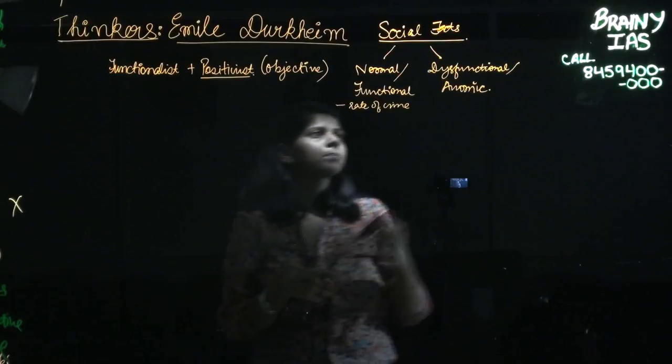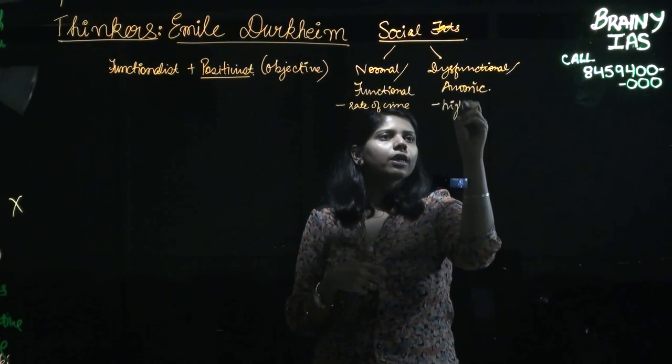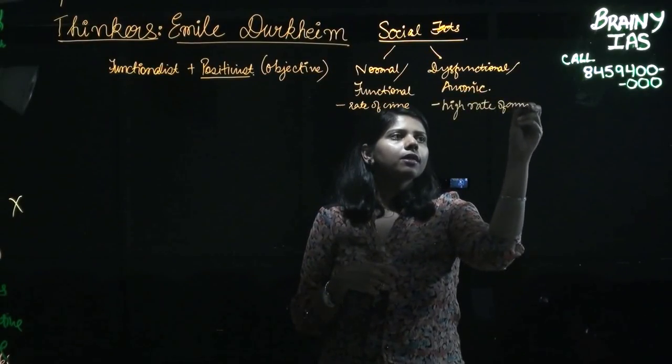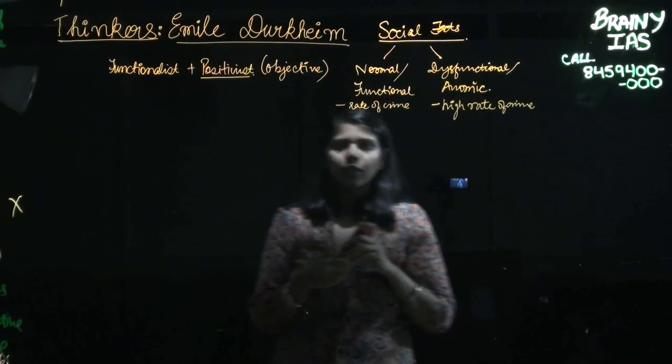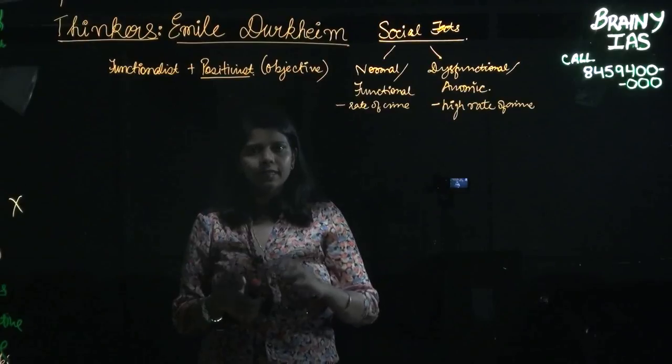But when this rate of crime becomes soaring high or high rate of crime, it becomes a dysfunctional or an anomic fact. It shows that there is a deviance from the normal or the required behavior.